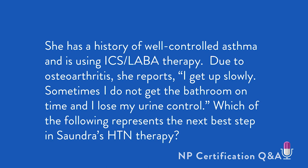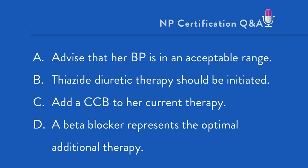Which of the following represents the next best step in Sondra's therapy? A: advise that her blood pressure is in an acceptable range — remember, it was 152 over 96. B: thiazide diuretic therapy should be initiated. C: add a calcium channel blocker to her current therapy. Or D: a beta blocker represents the optimal additional therapy.